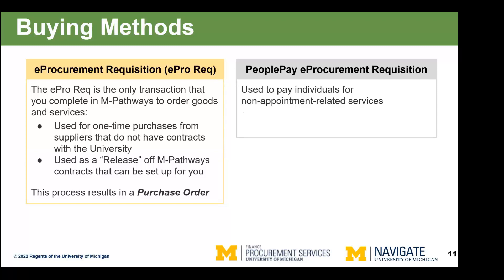Finally, we come to the EPRO requisition — our M Pathways purchase order system. For anything that is not a MarketSite order or an internal service provider, the way that we interact with suppliers is through purchase orders. They're used for one-time purchases where we don't have contracts in place. Or if procurement has established a contract for a specific project and you're looking to make payments in a series, you would enter a requisition in Pathways referencing that contract number, and it becomes a contract release. Contract releases don't require any additional review from procurement. We'll also talk about People Pay requisitions used to pay individuals — it could be an honorarium or travel costs.